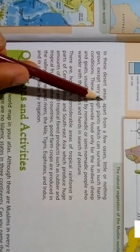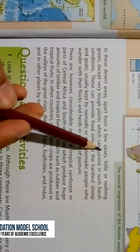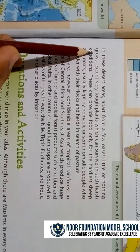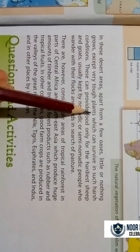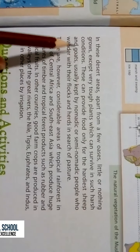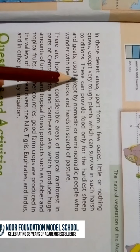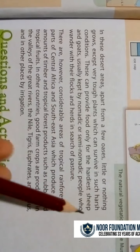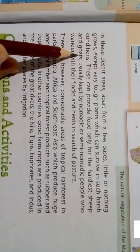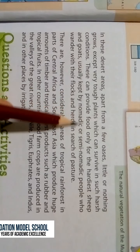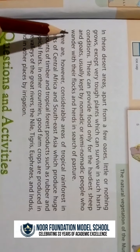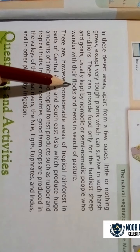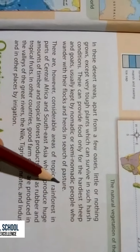In these desert areas, apart from a few oases, little or nothing grows, except very tough plants which can survive in such harsh conditions. These can provide food only for the hardiest sheep and goats, usually kept by nomadic or semi-nomadic people who wander with their flocks and herds in search of pasture.